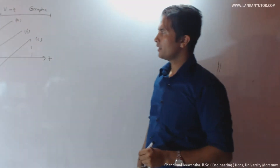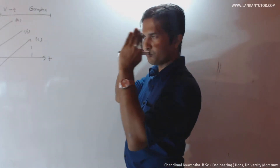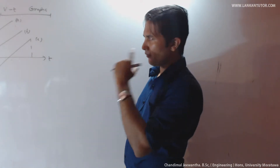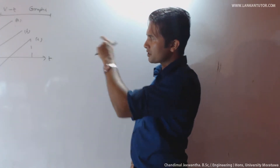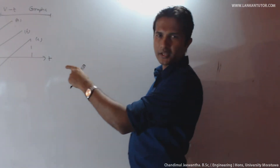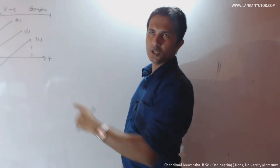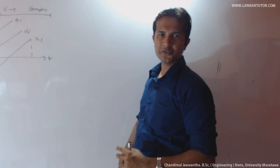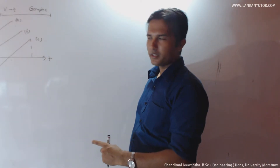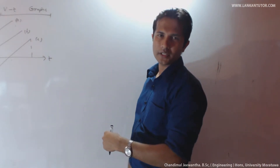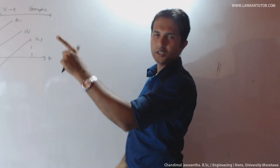Considering symbol A: starts with positive velocity, which means the object moves towards the positive direction, then moves with uniform acceleration towards the positive direction. Considering symbol B: starts from zero and goes from the origin — moves towards the positive direction with uniform acceleration.